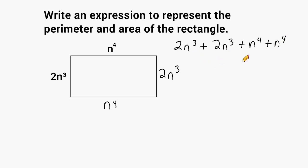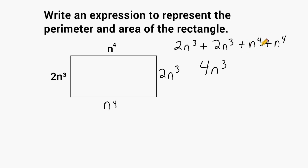In this expression we have four terms, and we're going to combine like terms. You can combine terms if they have the same variable and the same exponent. The two 2n-to-the-third terms combine to give four groups of n to the third, and the two n-to-the-fourth terms combine to give two groups of n to the fourth. These two resulting terms cannot be combined because they have different exponents, so the perimeter expression is 4n³ + 2n⁴.